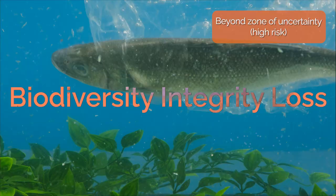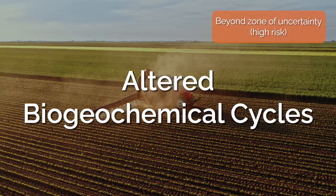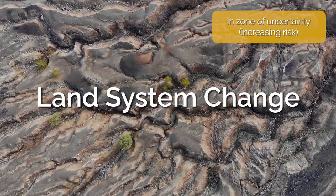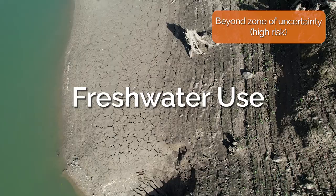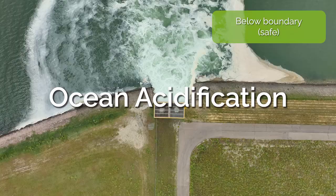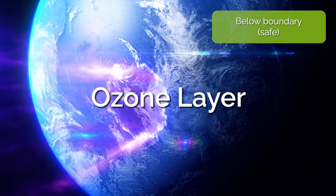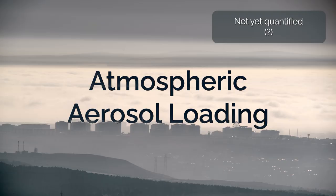The nine boundaries are: climate change, biodiversity integrity loss, altered biogeochemical cycles, land system change, freshwater use, ocean acidification, chemical pollution and novel entities, ozone layer, and atmospheric aerosol loading.